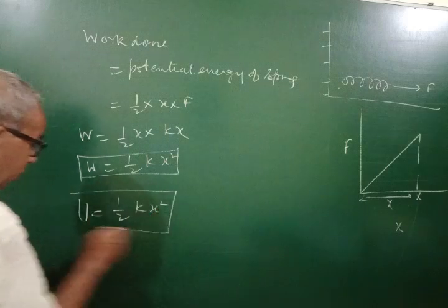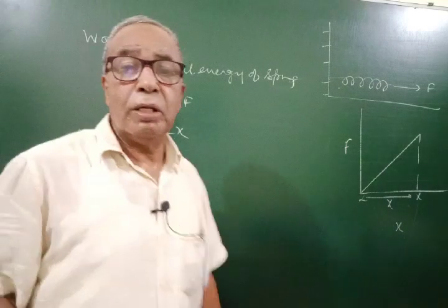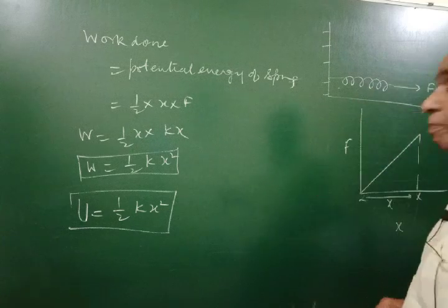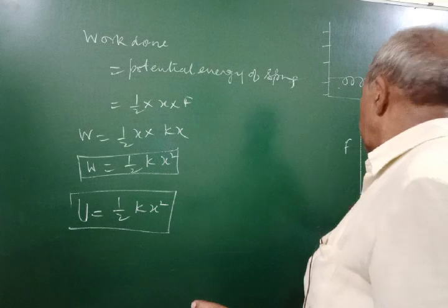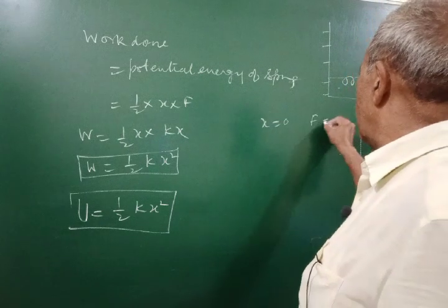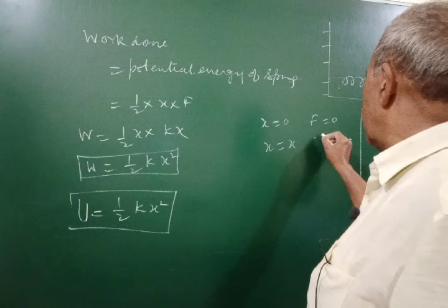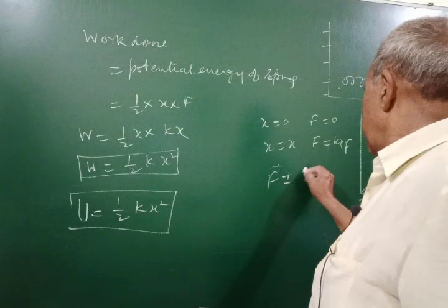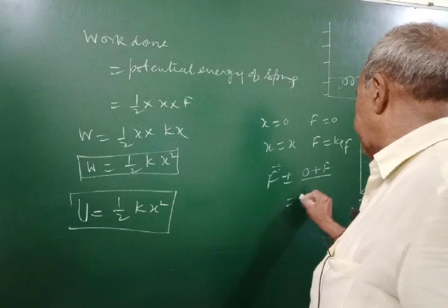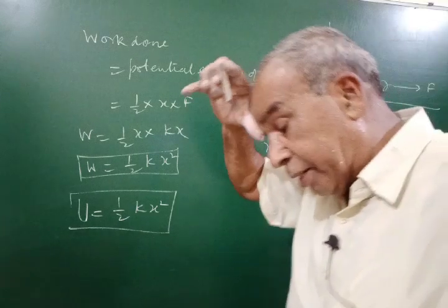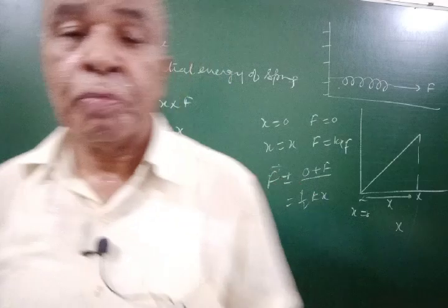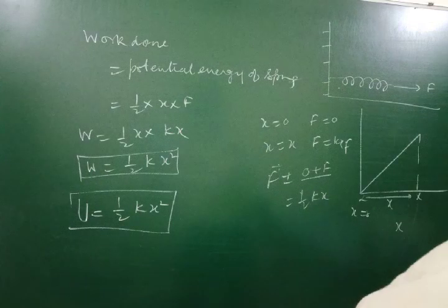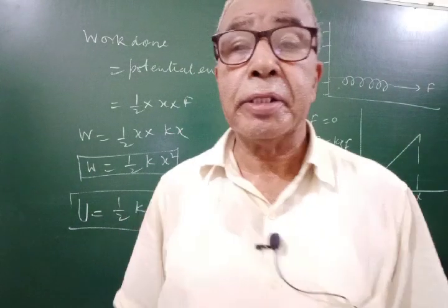If K is in Newton per meter and x in meters, then this energy will be in joules. You can also calculate this work done by variable force using the integral method or by taking average force. Average force ranges from 0 to F = Kx, so average force = ½Kx, and work done = ½Kx × x = ½Kx². This work appears in the form of potential energy. So this was the concept of potential energy of a spring and potential energy of a body at a certain position.